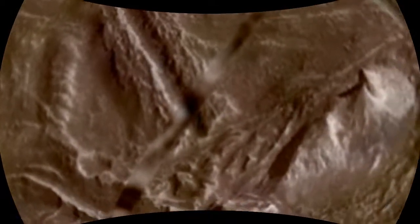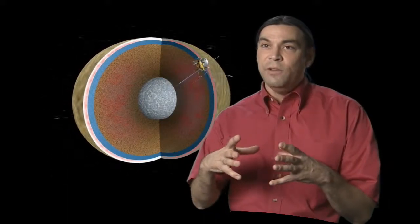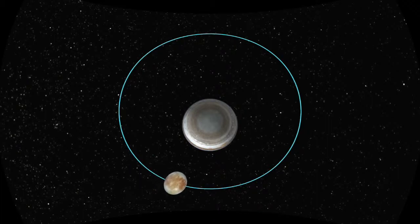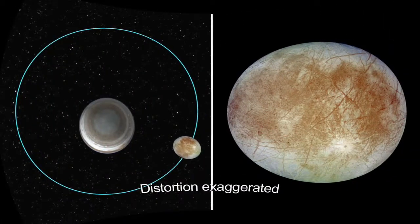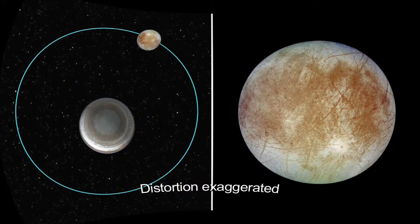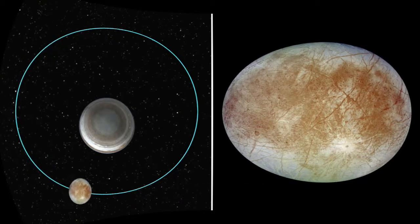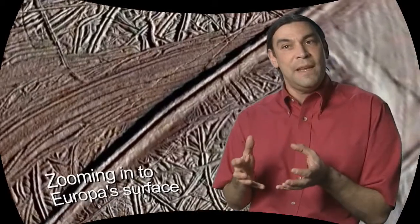So what we can do with a spacecraft in orbit around Europa is measure how Europa flexes as it's stretched by Jupiter's gravity. That tells us something very specific about how stiff that ice shell is. And by how stiff it is, we can get a measure of its thickness.